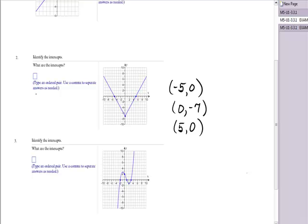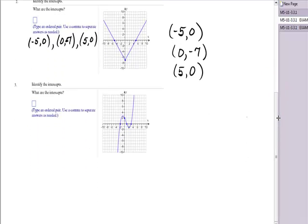Now, when you type those in there, it would be parentheses, negative five, comma, zero, close, comma, parentheses, zero, comma, negative seven, close parentheses, comma, five, comma, zero, because it says type an ordered pair, use a comma to separate answers as needed. This particular problem did not ask you to separate them into groups of x-intercept, y-intercept.